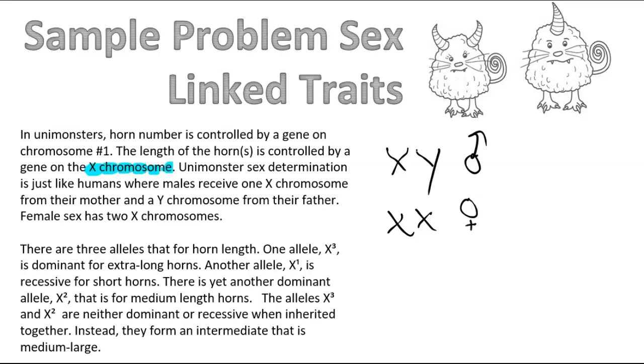Now horn length itself is controlled by the X chromosome. So depending upon what allele is inherited, it will determine whether a Unimonsters has a short horn or a long horn or something in between. In the problem, it states that there are three alleles. You have one allele that is X with a superscript 3,